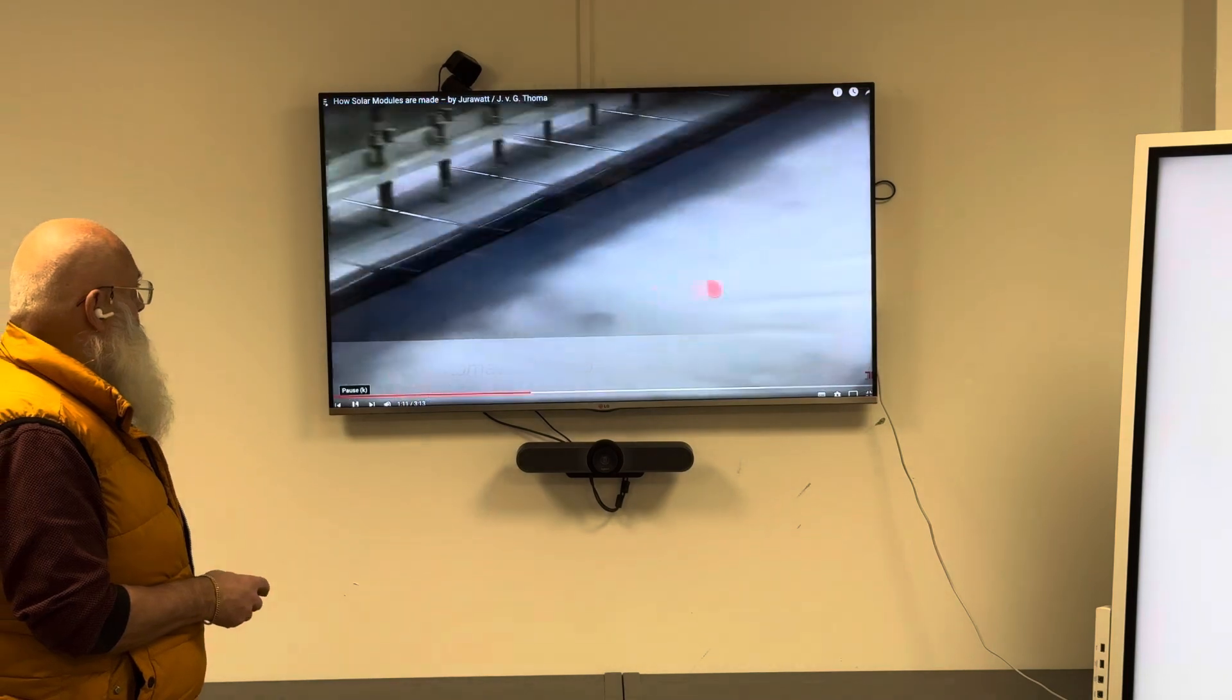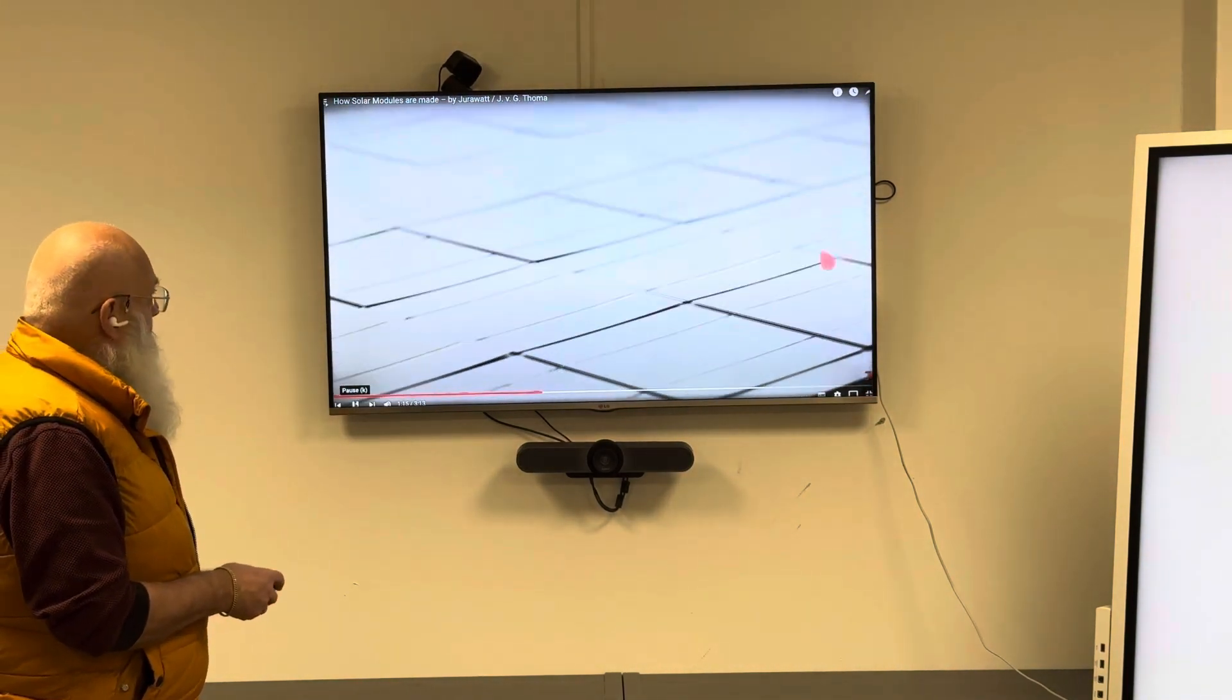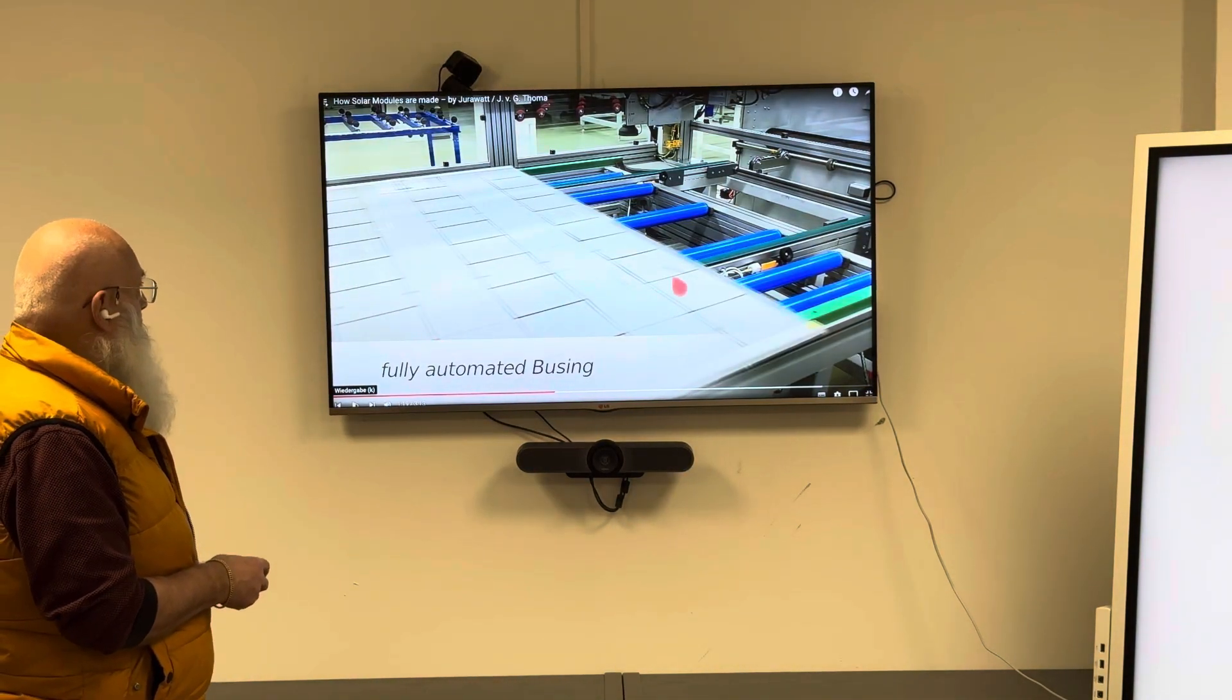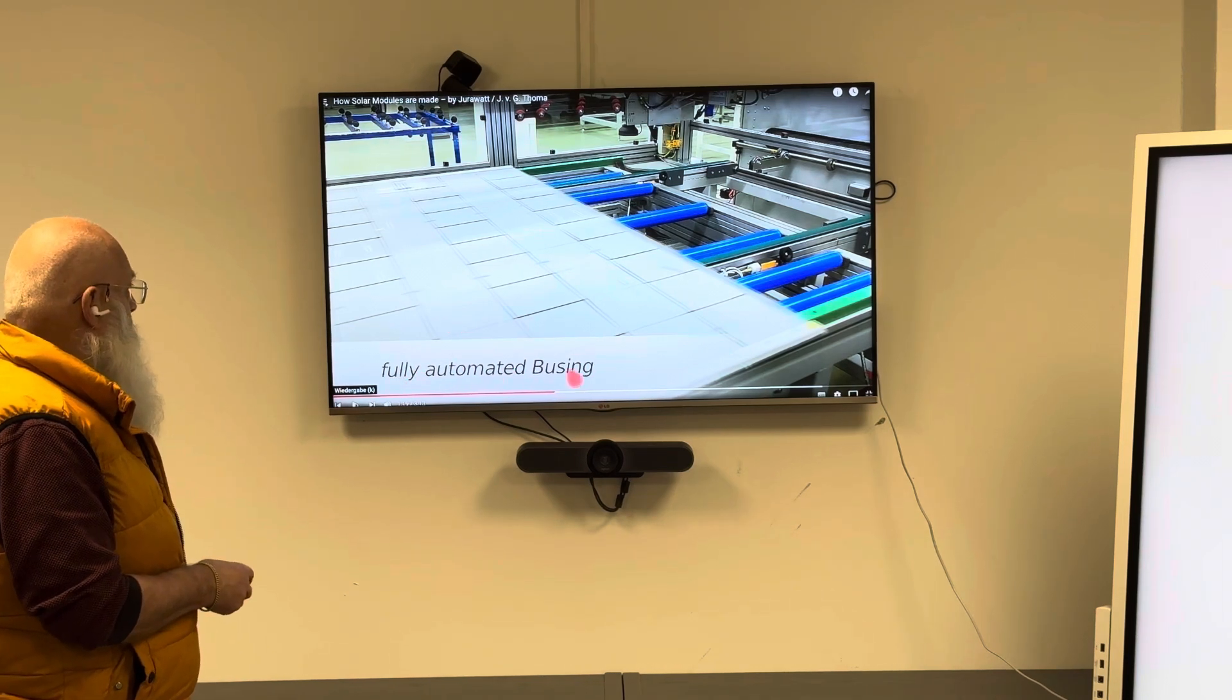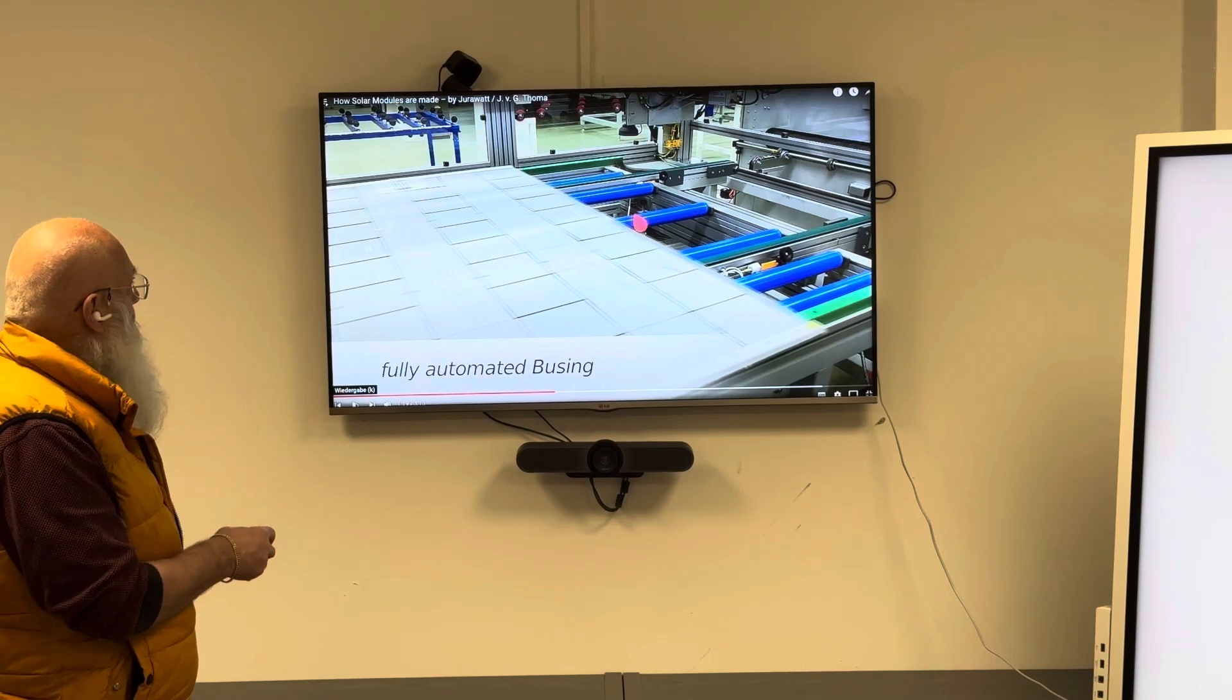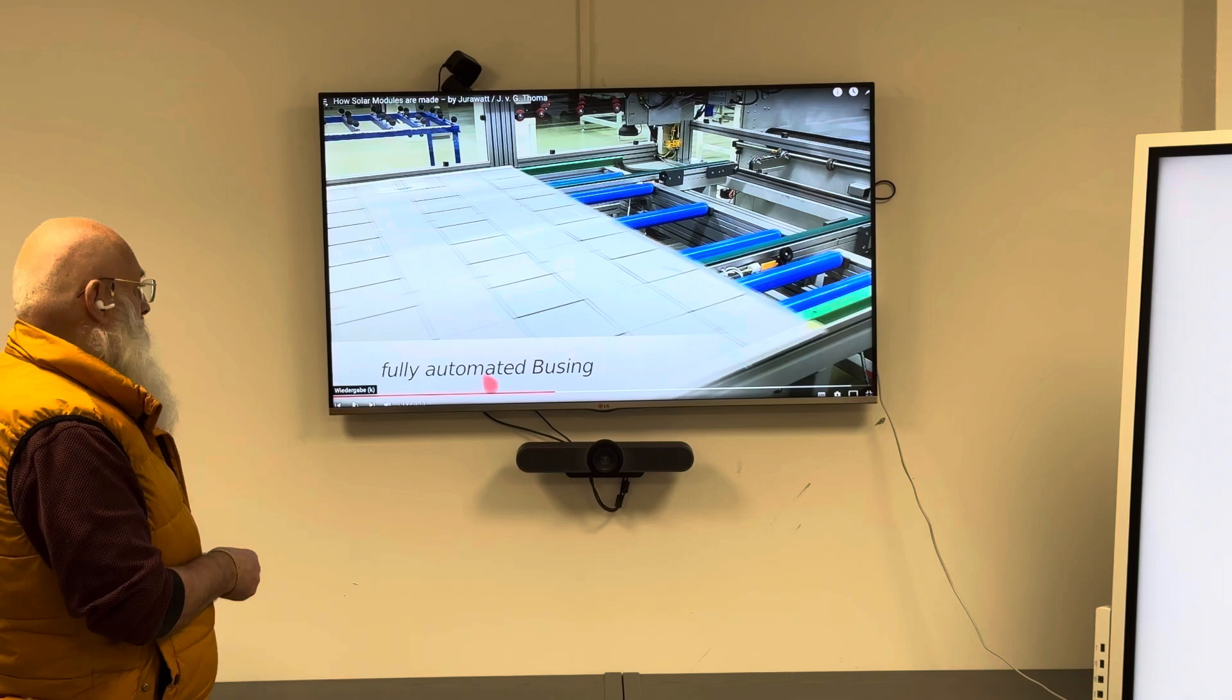This is the first string, this is the second string, and this was the last string. The solar module is now ready and has to be covered by a second foil and by the backsheet before we are doing a fully automated buzzing, which is the connection on the top side, on the middle side, and on the bottom side.